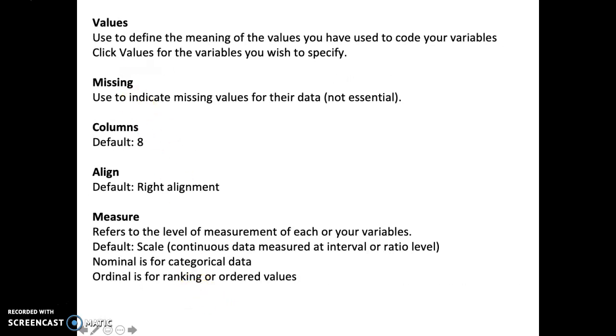After that, we have values. So these values are used to define the meaning of the values you have used to code your variables. So click values for the variable you wish to specify. For example, let's say your variable is gender. So you can define gender as value number one for male and value number two for female. Other example, let's say you have a variable of teaching experience. So you can define the value for number one is teaching experience between 1 to 5 years. Number two can be defined as teaching experience between 6 to 10 years. Number three, 11 to 15 years, so on and so forth. It depends on how you define the meaning of the value that you have to code your variable.